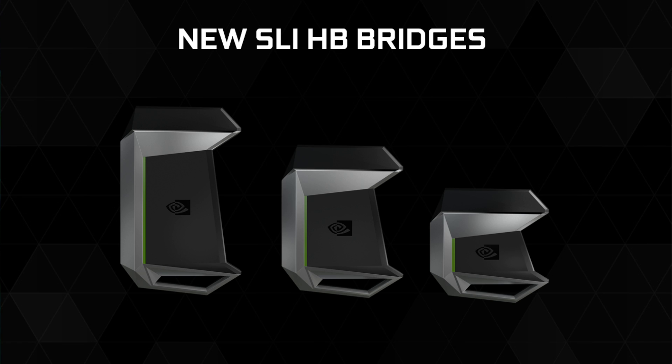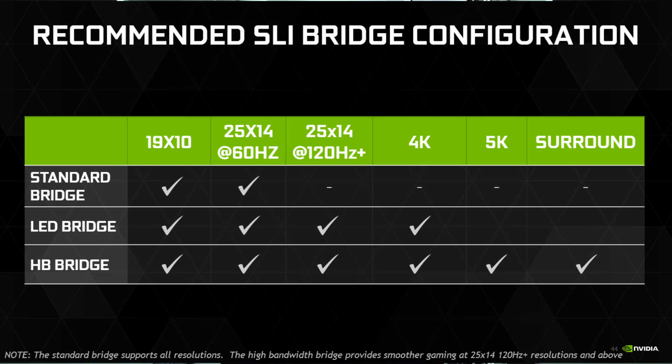You might have heard about it already — this is the new NVIDIA high bandwidth bridge. The big question for me was: what is really the difference compared to the older flexible SLI bridge, and especially what is the performance gain and what is the real technical difference? Let's take a look at the graphic released in the NVIDIA whitepapers with the GTX 1080 launch, which shows that the recommended SLI bridge configuration for 4K gaming would be either the LED bridge or the HB bridge.